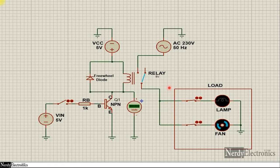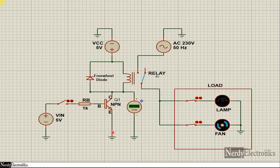Here we have the circuit. We have the supply which is 5 volts — this may not be a power supply, it could be a GPIO from a microcontroller. So you can get a high or low signal from the microcontroller. We have a switch here for simulation. That goes to the base of the transistor. The emitter is grounded, and at the collector we have a relay.